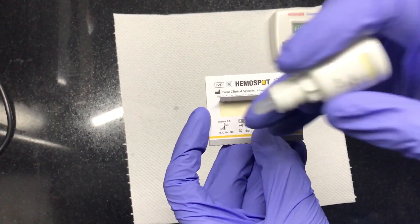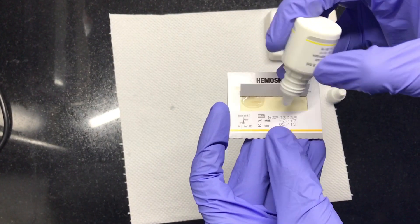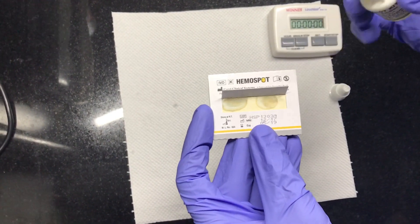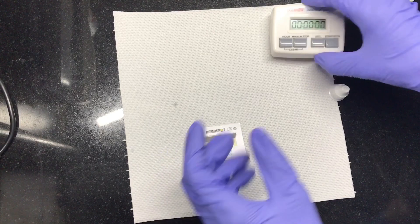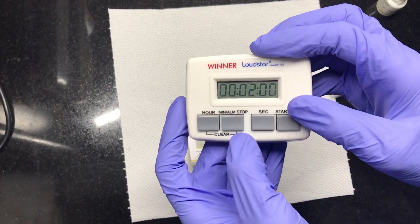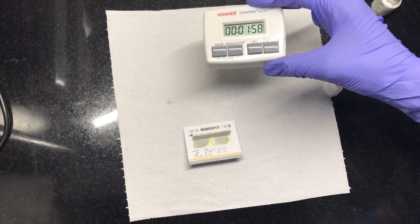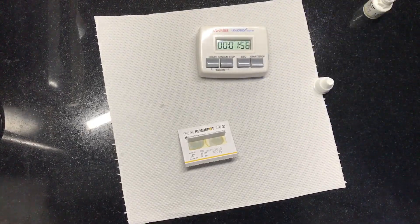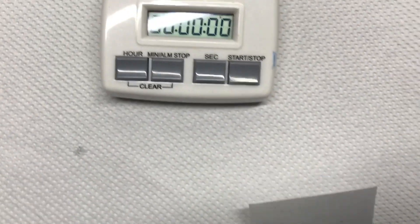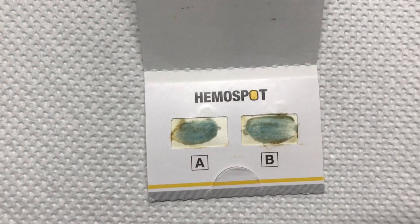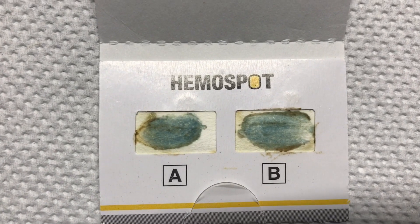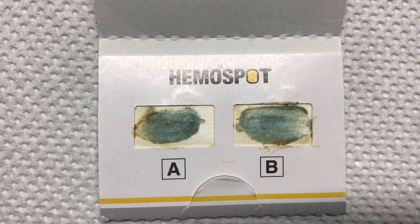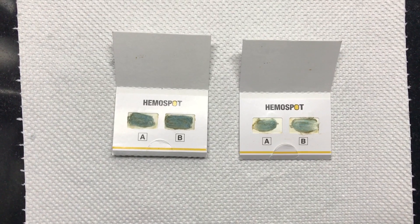Set your timer for two minutes and leave the card aside. After two minutes, if you see a tint of blue color in either of the windows, then it means the test is positive. You can repeat the same test on another fecal sample just to confirm.